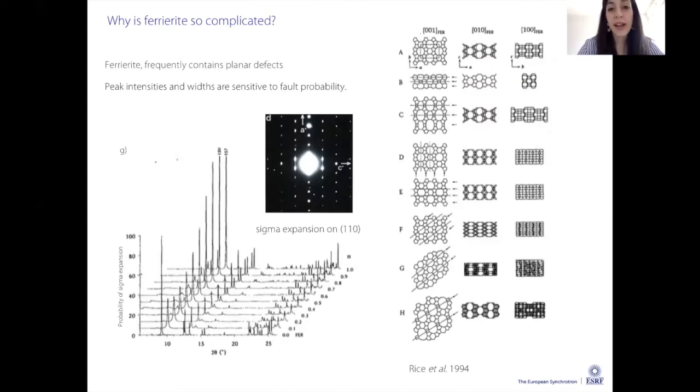Ferririte is also complicated because it frequently contains planar defects. If you're collecting a powder diffraction pattern you'll see that peak intensities and widths are sensitive to this fault probability. As you can see in these pictures, there are several kinds of defects. By increasing the number of defects, which are called sigma expansions, the fault probability increases and your peak intensities are completely messed up.